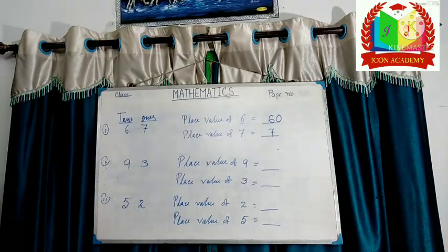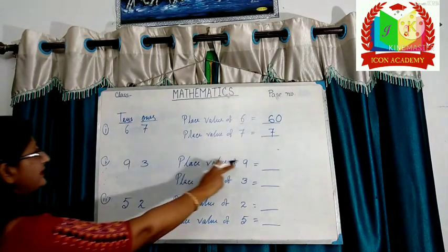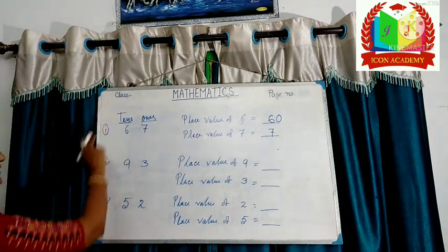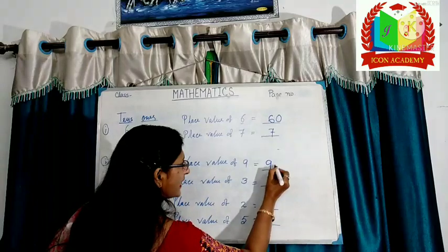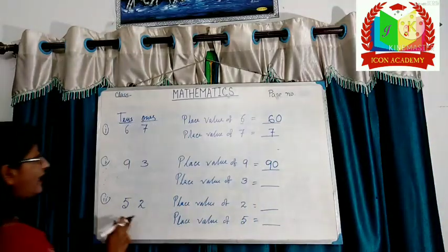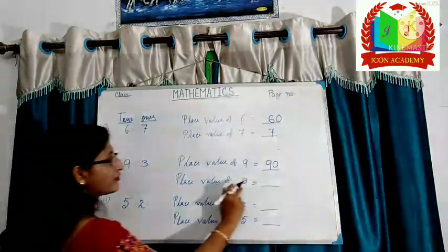Next example, ninety-three. Place value of nine. Nine is on tens place. So, the place value of nine is ninety. And three is on ones place. So, the place value of three is three.